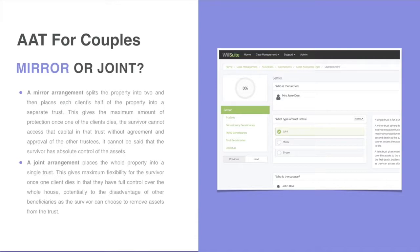The mirror arrangement splits the property into two and then places each client's half of the property into a separate trust. This gives the maximum amount of protection once one of the clients dies. The survivor cannot access the capital in that trust without the agreement and approval of the other trustees, so it cannot be said that the survivor has absolute control of the assets.